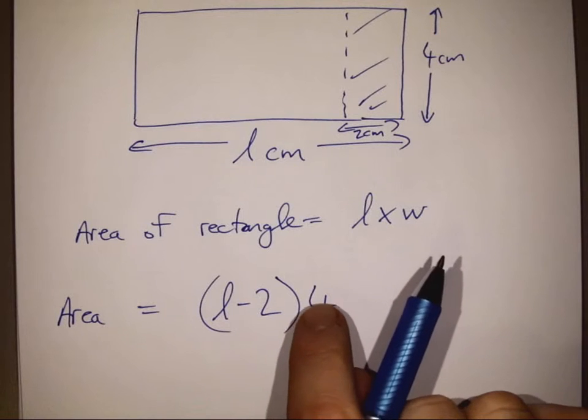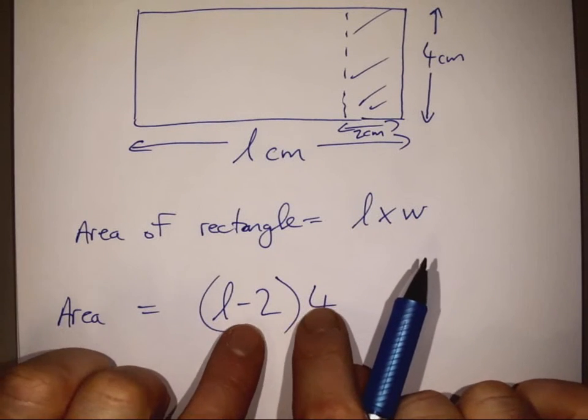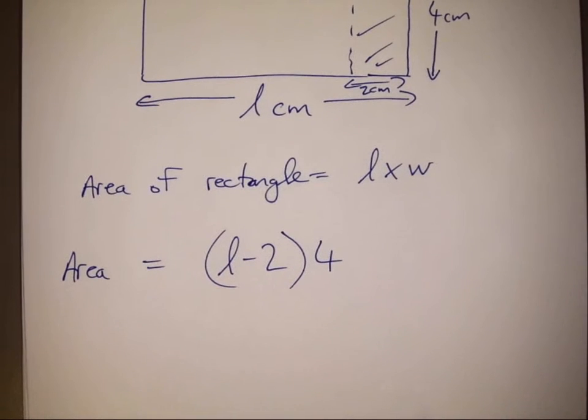So we have to multiply these two items together to give us our final expression for the area of our rectangle.